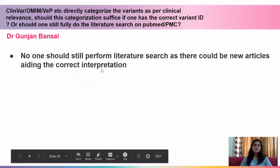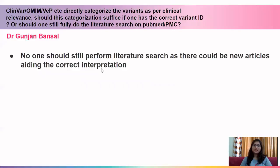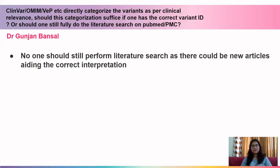The next question is by Dr. Gunjan. She asks: ClinVar, OMIM, and VEP directly categorize variants for clinical relevance — should that suffice, or should one still do the full literature search? If that categorization were sufficient, we would not have to do all this hard work of searching different databases. The categorization in ClinVar, OMIM, and VEP is not updated very frequently, so new articles may have emerged in the meantime. That is why you should perform the literature search with the latest articles and not completely depend on ClinVar, OMIM, or VEP categorizations.